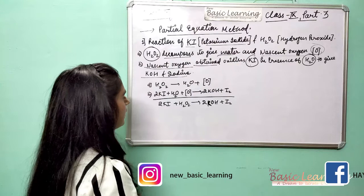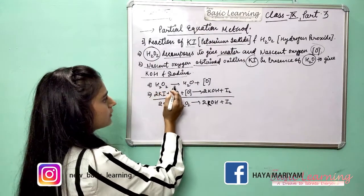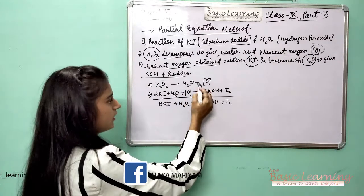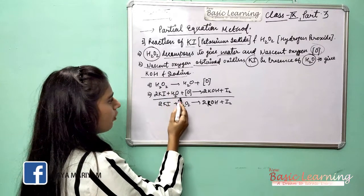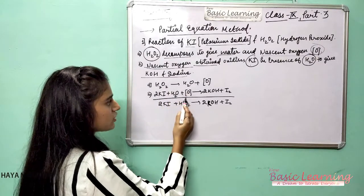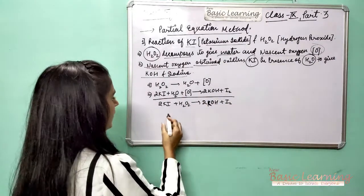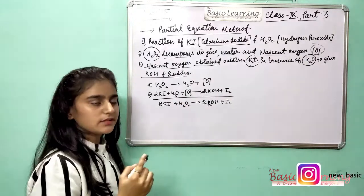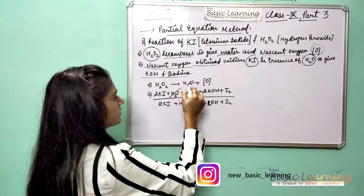So now let's balance this. H2O2 gives H2O plus nascent oxygen. Then 2KI plus H2O plus nascent oxygen gives 2KOH and iodine. Then on both sides, we will cancel what is common.